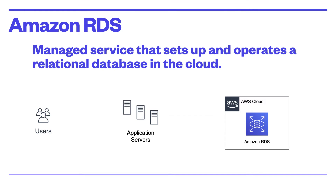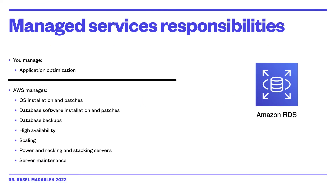Amazon RDS is a managed service that sets up and operates a relational database in the cloud. You manage the application optimization, and AWS manages the OS installation and patches, database software installation and patches, database backups, high availability, scaling the power, and racking and stacking of the servers, and server maintenance.